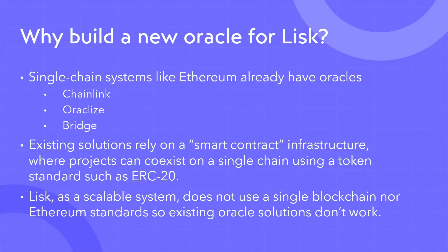So, why are we building a new oracle for Lisk? Single-chain systems like Ethereum already have multiple oracle solutions. However, all of these existing solutions rely on a smart contract infrastructure. In these environments, projects can coexist and cause congestion in a single chain. Lisk, on the other hand, is designed for scalability, so it does not use a single blockchain for all projects. But this also means that existing oracle solutions won't work, and that's why we're building a new one.